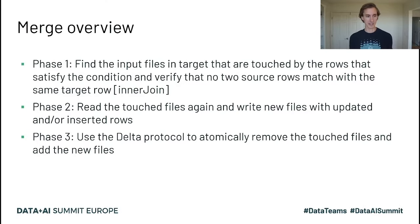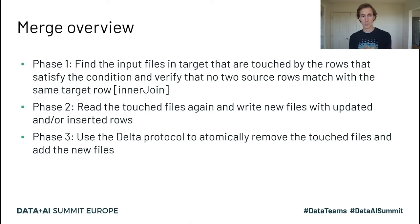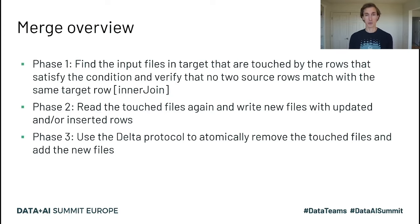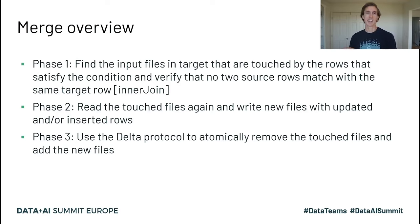A merge within Delta Lake can really be broken down into three key phases. Phase one is we need to find the input files in the target that are touched by the rows that satisfy the join condition. Then we want to verify that no two source rows will modify the same target row, and we do this via an inner join. The second phase is we read those touched files again and we write new files with updated and/or inserted rows.